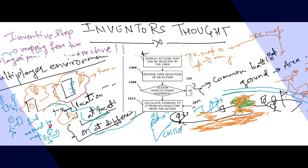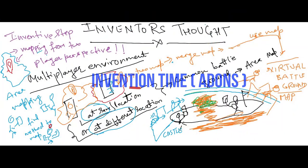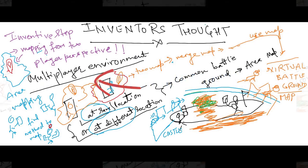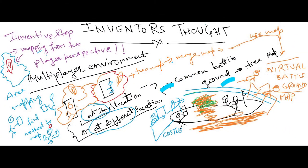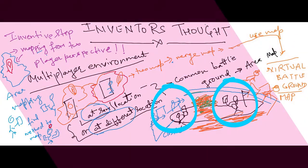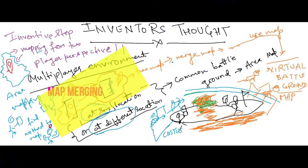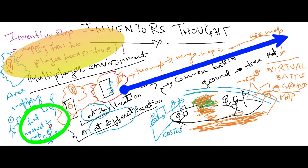It's invention time. In this domain, a multiplayer environment setup can be done. One or more players can make a virtual map. Merging of maps and making them ready for a gaming environment can be thought of as an inventive step.